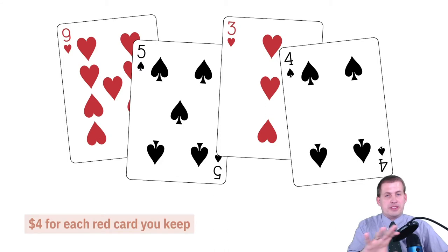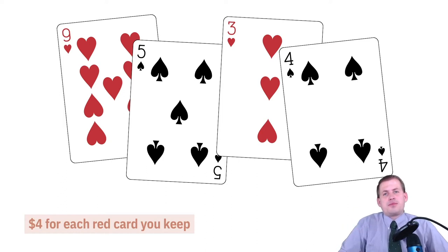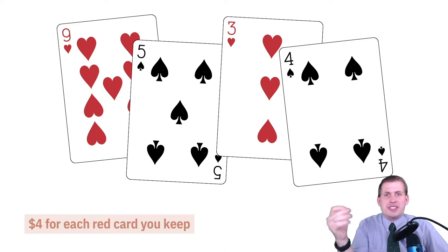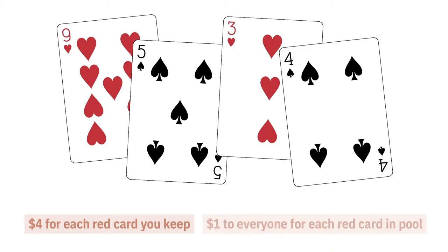If you give away both of your red cards, you get zero dollars personally. The black cards are worth zero — whether you keep them or give them away, they're just something you can contribute. Now, if you keep both red cards you get eight dollars, and there's no incentive to give away red cards because you're just giving away money. But the incentives get complicated when you give a red card to the general public pool, where everybody puts in two cards at a time.